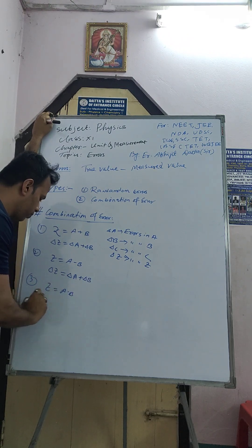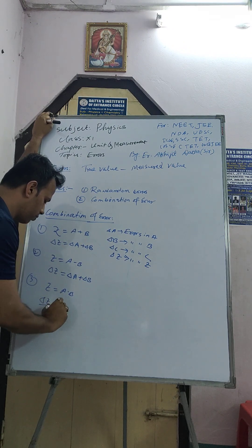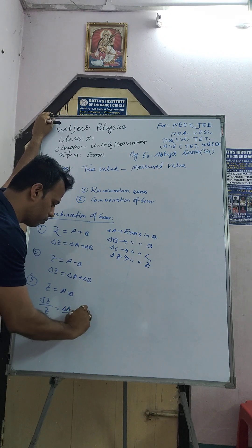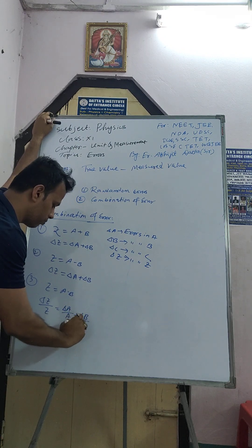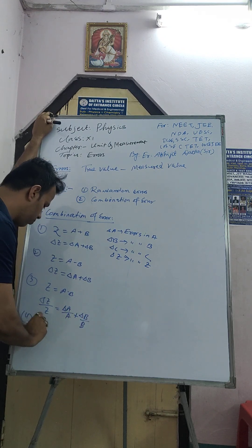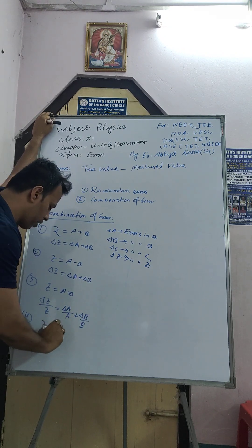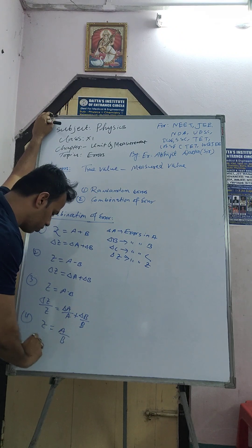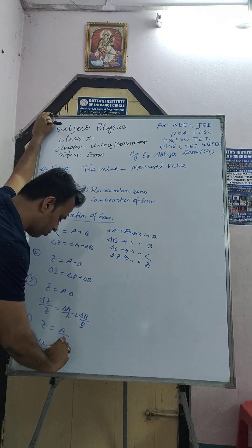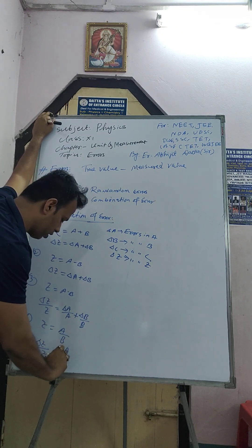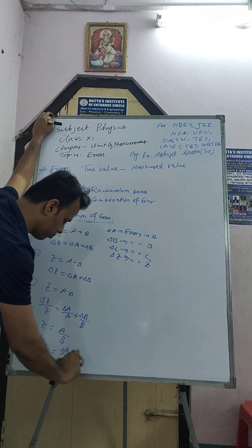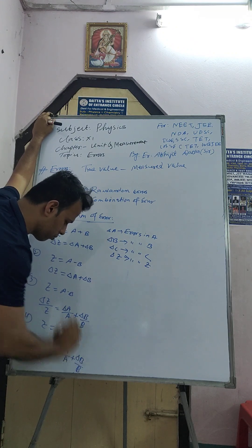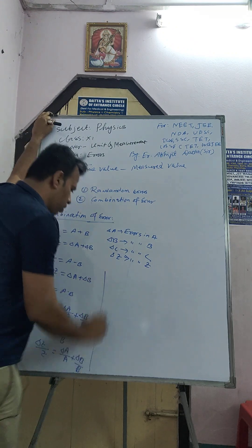Formula 3: if z equals a into b, then del z by z equals del a by a plus del b by b. Formula 4: if z equals a by b, then del z by z equals del a by a plus del b by b.